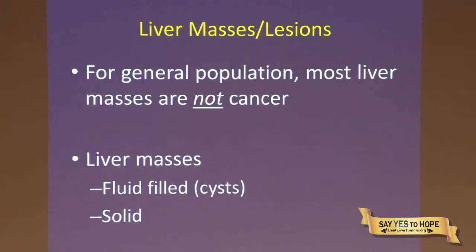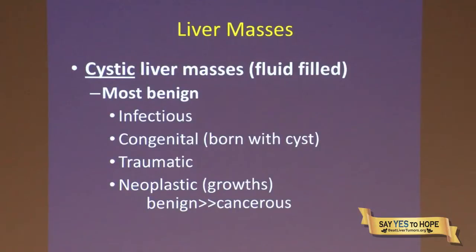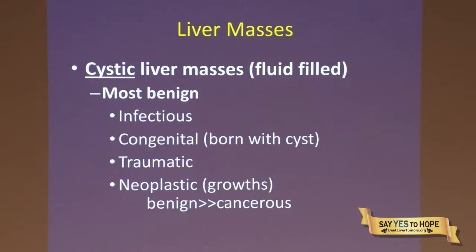If you look at liver masses in the general population, the most important thing is that most liver masses, lesions, or spots are not cancer. Liver masses can be fluid-filled or solid. Fluid-filled ones are called cysts or cystic liver masses — most of them are benign. Causes of cystic liver lesions include bacterial and parasitic infections, congenital cysts that are often asymptomatic, cysts after trauma, and neoplastic cysts, which are relatively uncommon. Most cysts are benign.